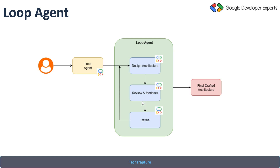This loop will keep going until there is no feedback from the review sub-agent, or we can set a max iteration — for example, two or three times to review and create the final architecture. After the loop is completed, it will go to the output using the final well-crafted architecture. This is the overall idea using the multi-agent system.